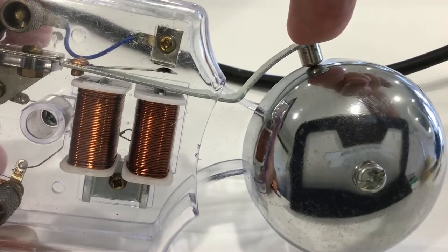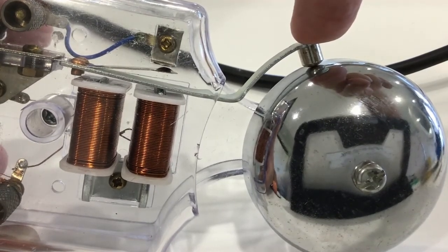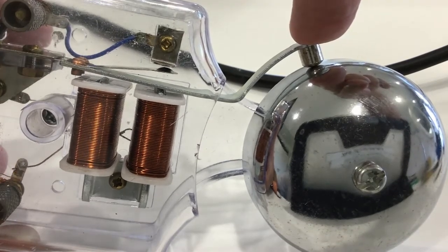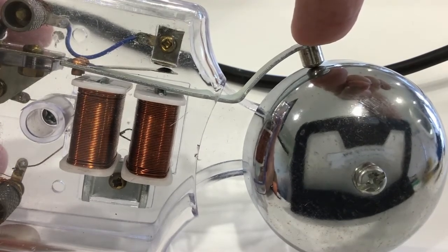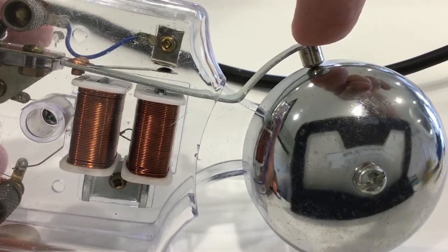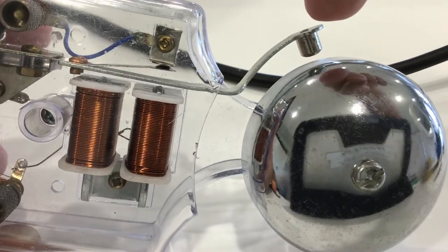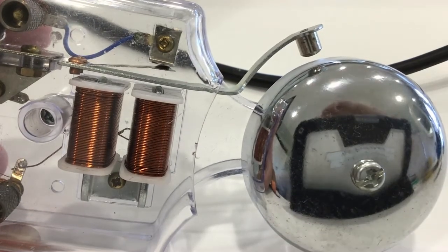Now what happens is that as soon as the gap occurs, the contacts are broken, the electricity no longer flows through the electromagnet and that turns the magnetic field off. Now if the magnetic field is off, there's nothing attracting the arm anymore and it returns back to its original position.